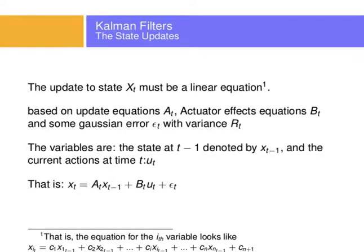Let's say the state of the filter is x_t. Let's assume that x_t updates with a linear equation. A linear equation is of the form where something equals a constant times some variable plus a constant times another variable, and so on — no x squared, no variables other than simple variables, not squared, not with any function.